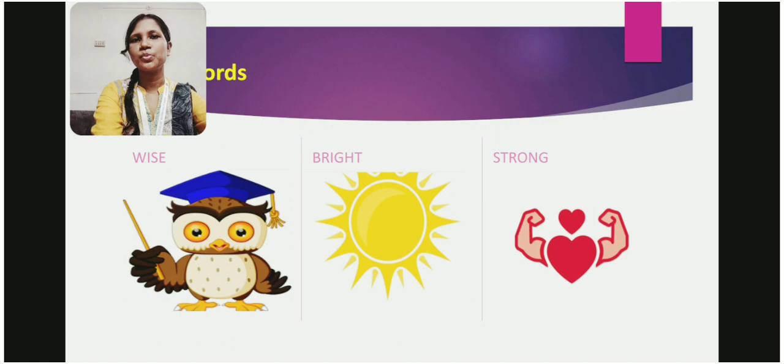Now, move on to our next word, Wise. Wise. It refers to that means that we can think about anything good or bad. Here, I have taken an example of an owl. It is wearing a hat and holding a stick in his hand. It refers to a wise owl.